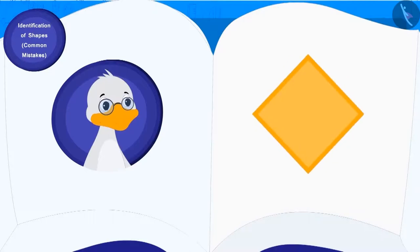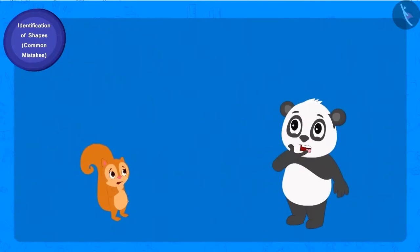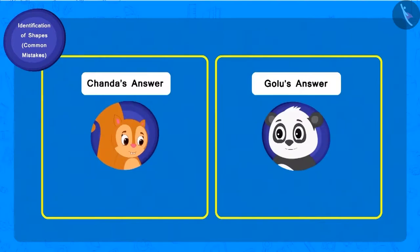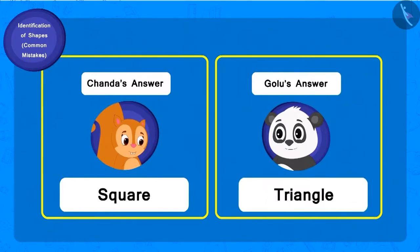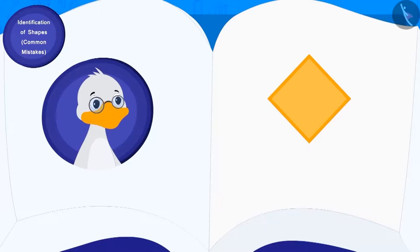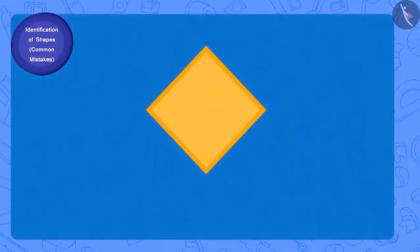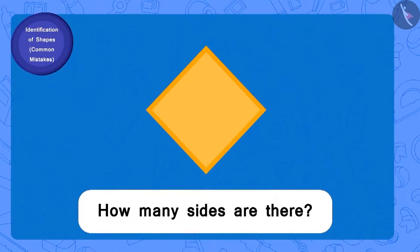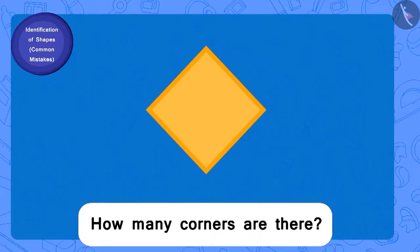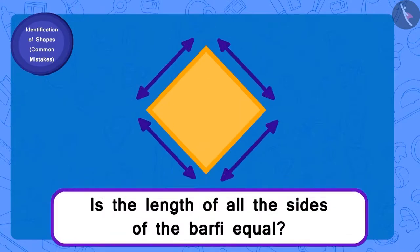Chacha first showed this piece of barfi. Both Chanda and Golu started thinking. Both of them wrote their answers. Here is Chanda's answer and here is Golu's answer. Come, let us look at the piece of barfi that Chacha has shown. How many sides does it have? Four. And how many corners? Four. Is the length of all the sides of barfi equal? Yes.